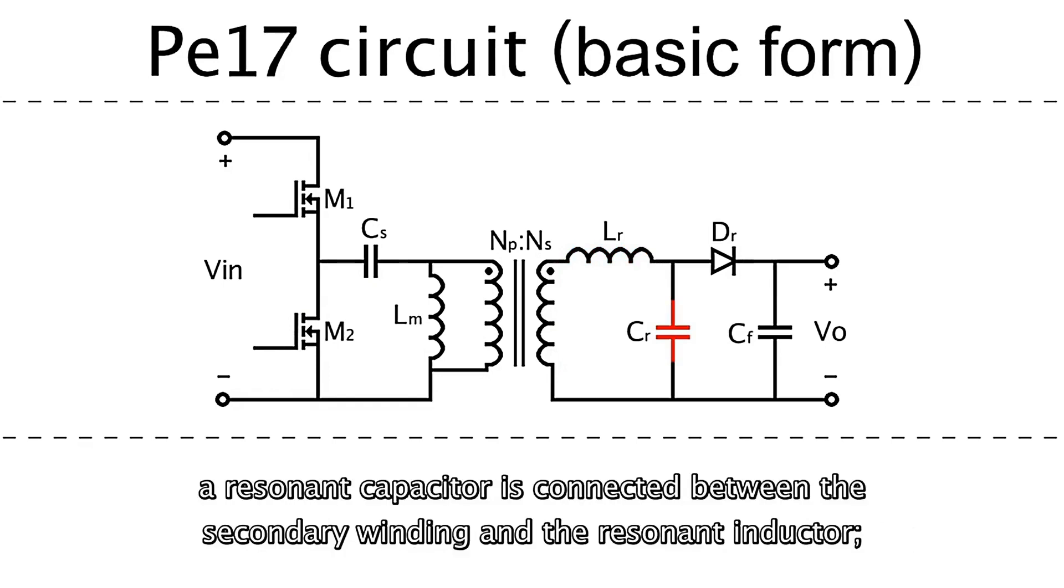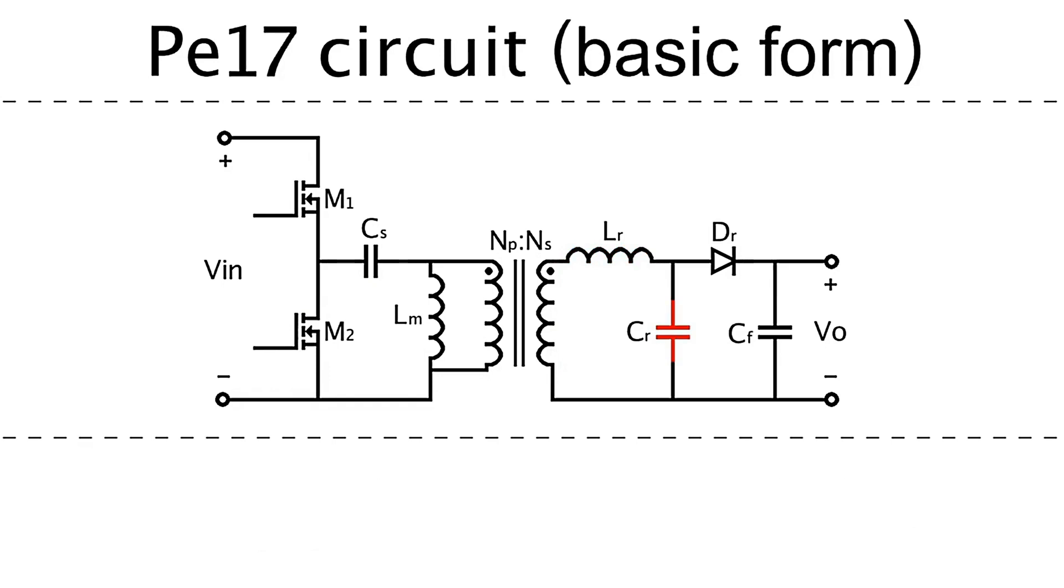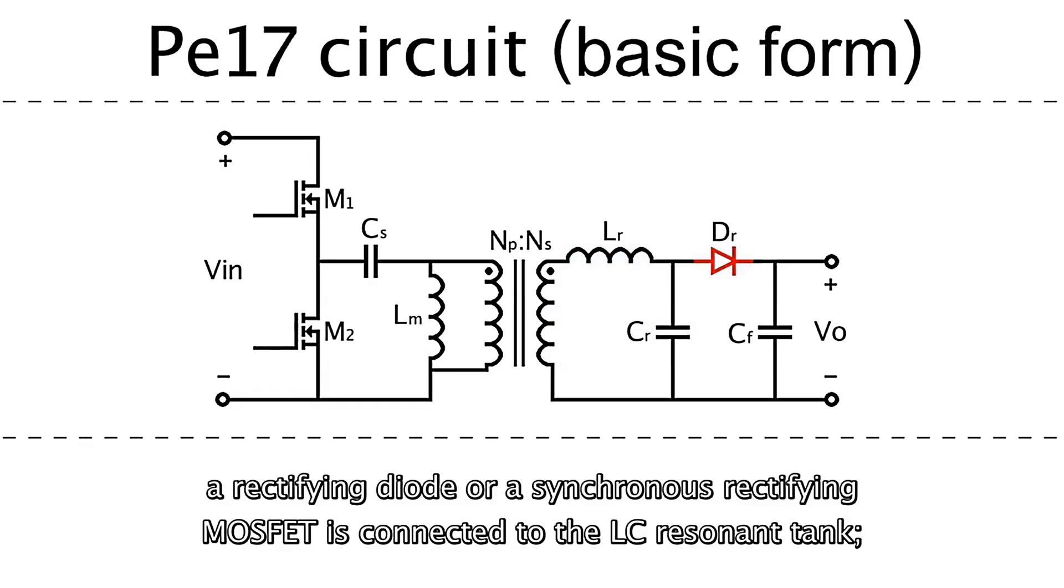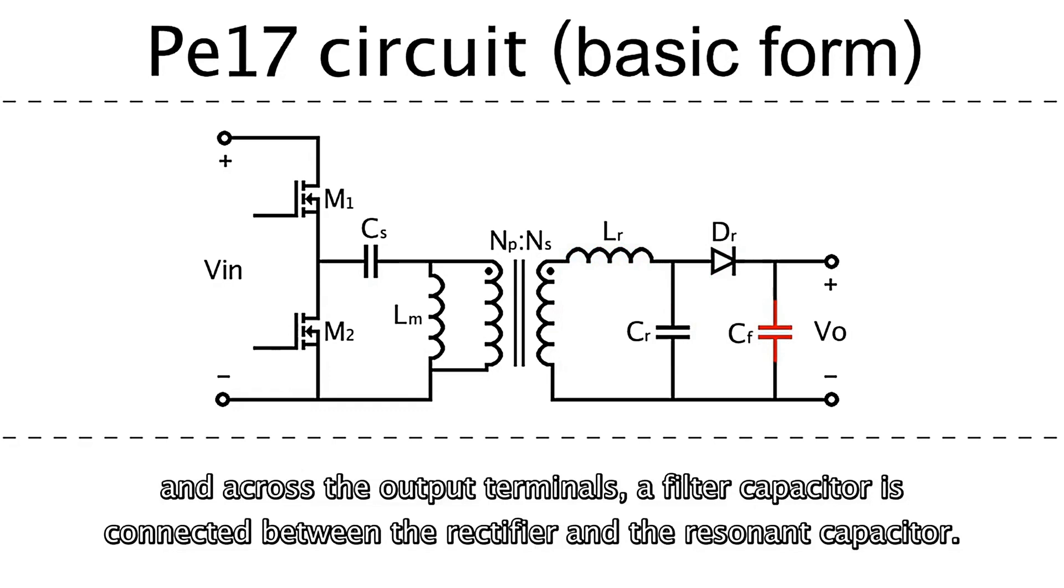A resonant capacitor is connected between the secondary winding and the resonant inductor. A rectifying diode or synchronous rectifying MOSFET is connected to the LC resonant tank. And across the output terminals, a filter capacitor is connected between the rectifier and the resonant capacitor.